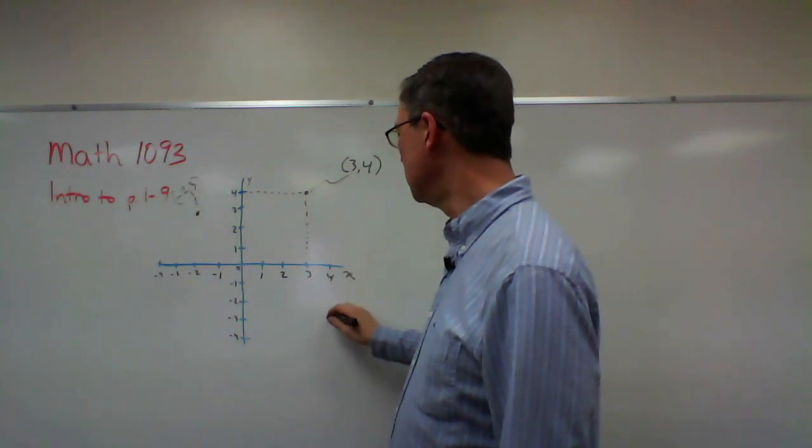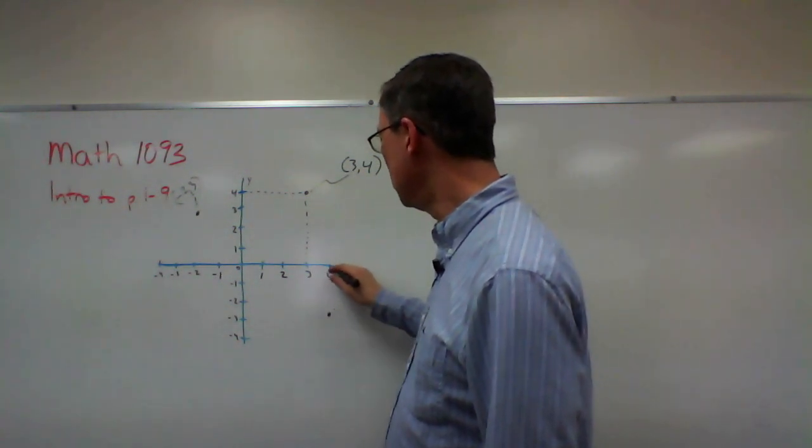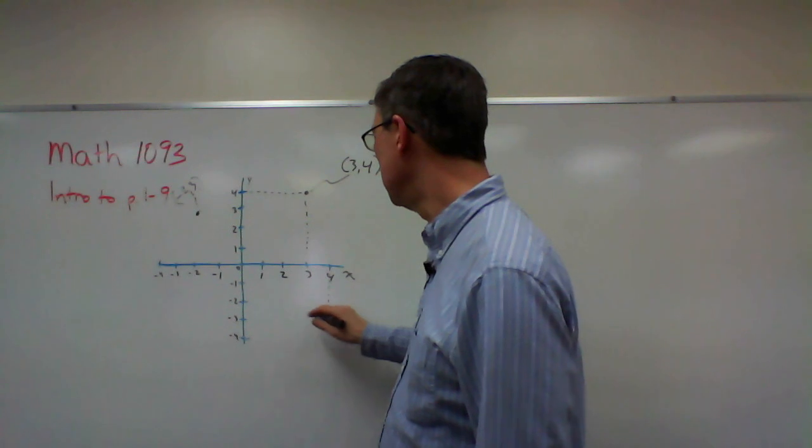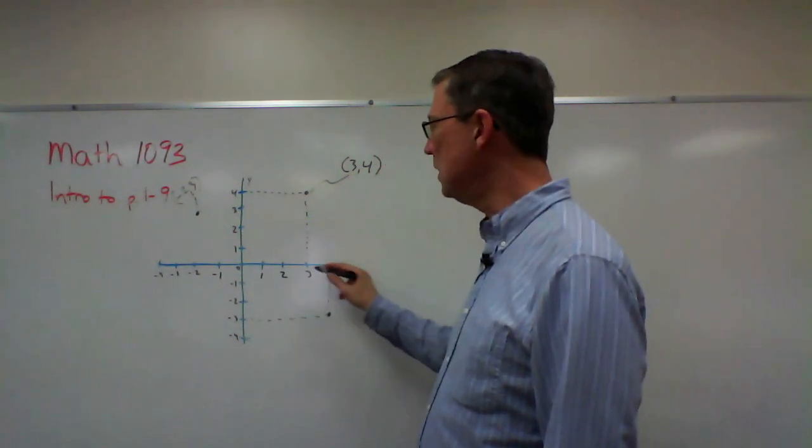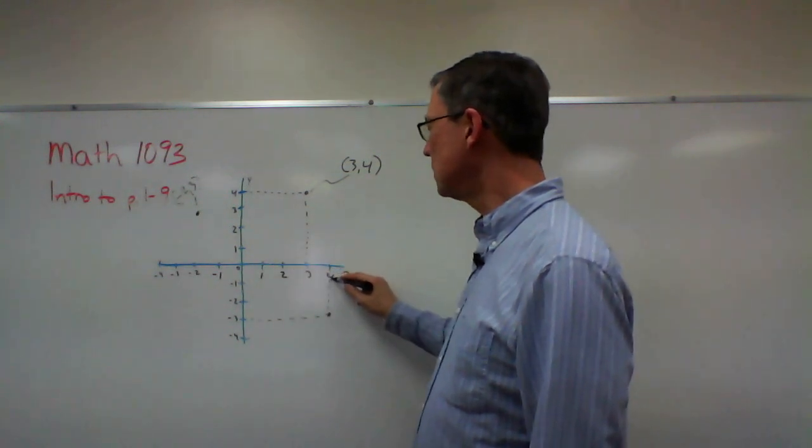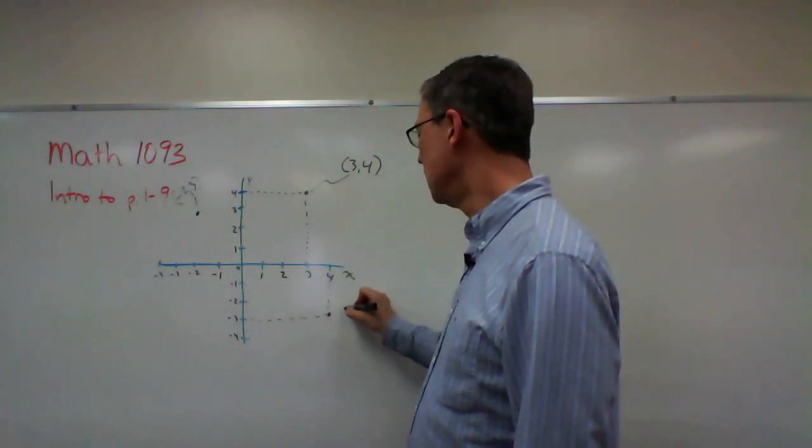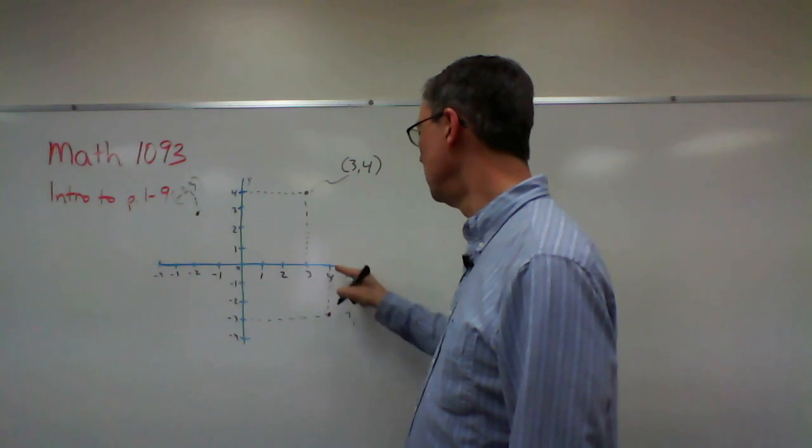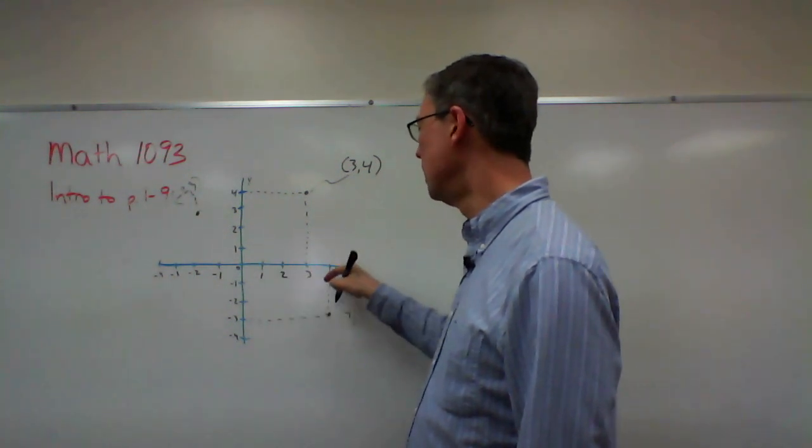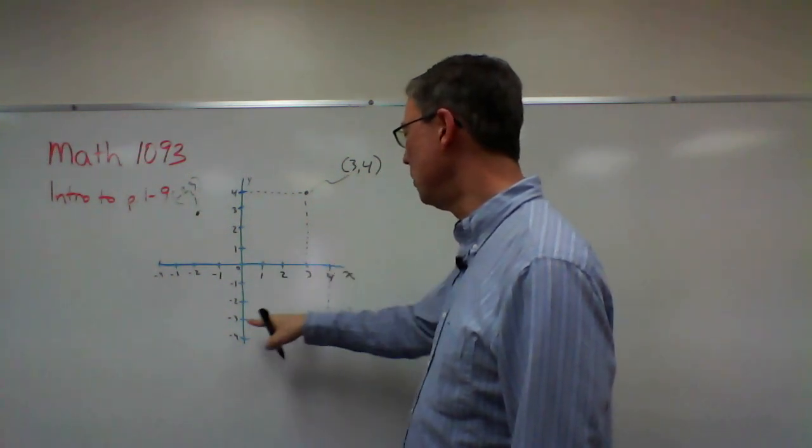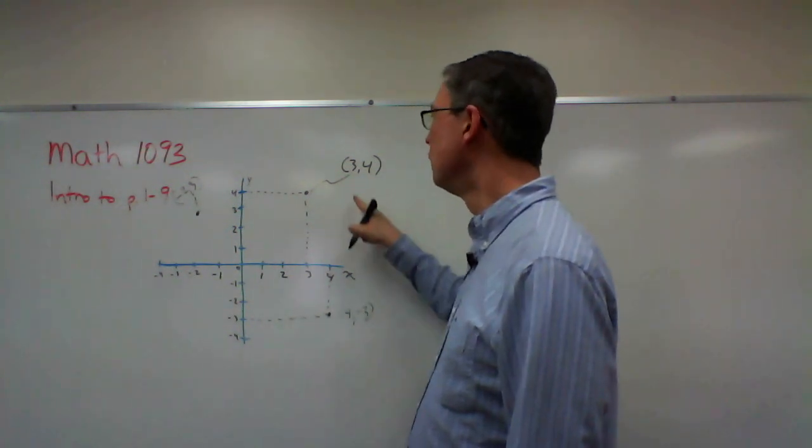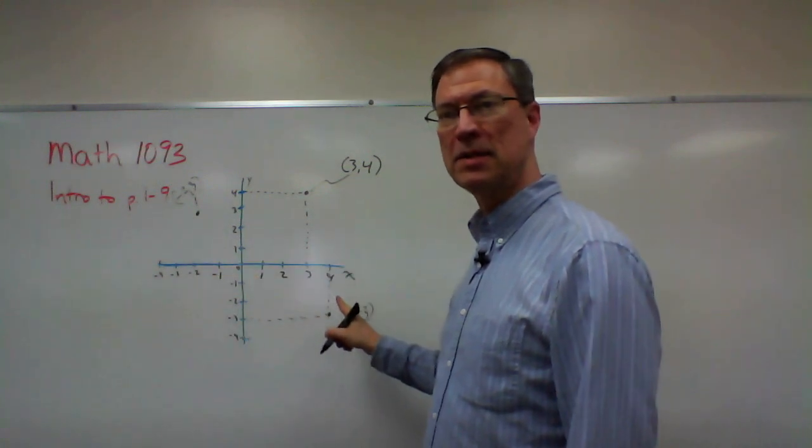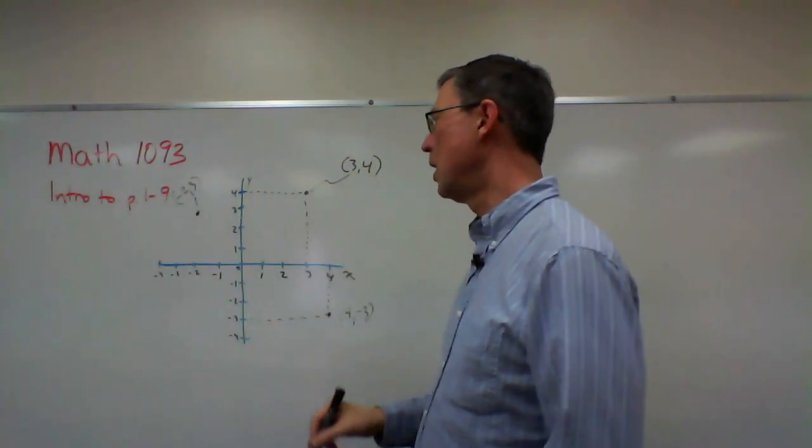Let me put a point right here and figure out what the address of this point would be. Well it's right where this intersects and where this intersects. So can you see what the address would be? We always do the x first. So that would be 4 out here on the positive 4 but then we're going down to negative 3. So the y value is negative 3. So in all of these the first number is the x the second number is the y.